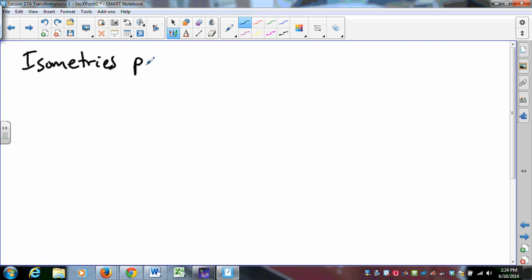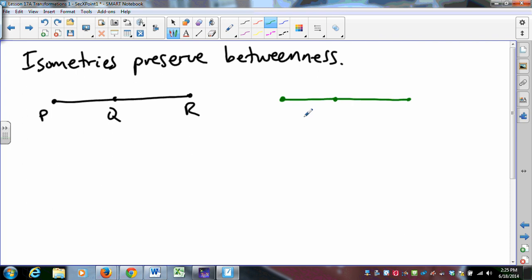Likewise, isometries preserve betweenness. And that's a very similar proof. If Q is between P and R, and I do an isometry to these points, then Q prime ends up between P prime and R prime. That is fairly straightforward. It is fairly obvious. Again, it comes from exactly what we just talked about.